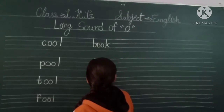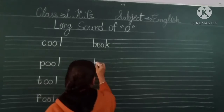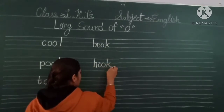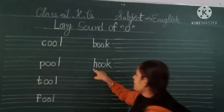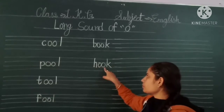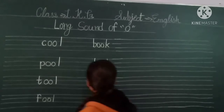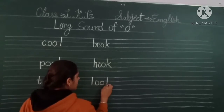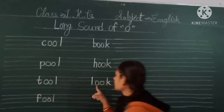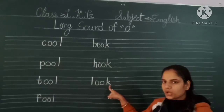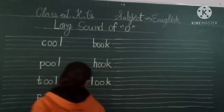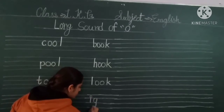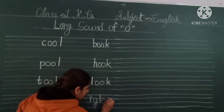Next slide. S Double O K — Book. S Double O K — Book. L Double O K — Look. L Double O K — Look. Next slide.